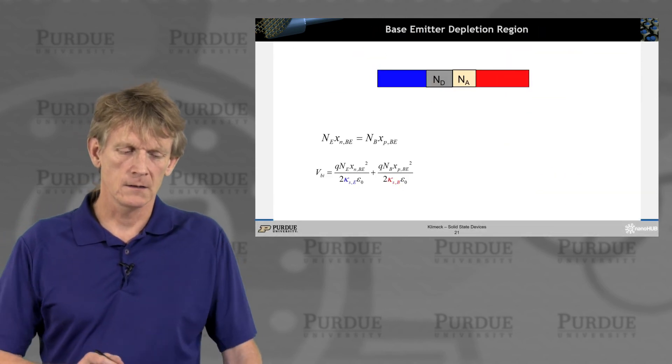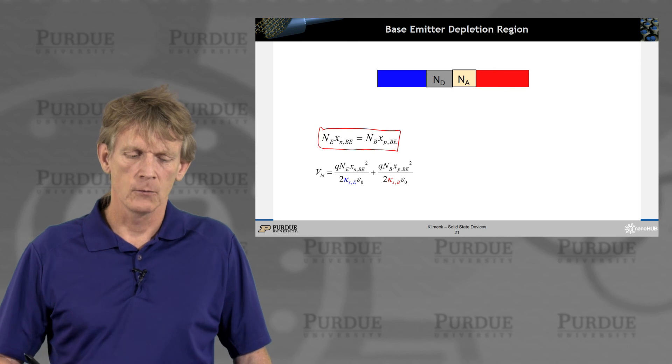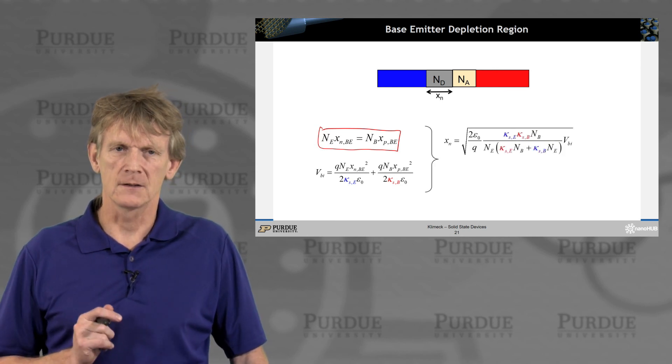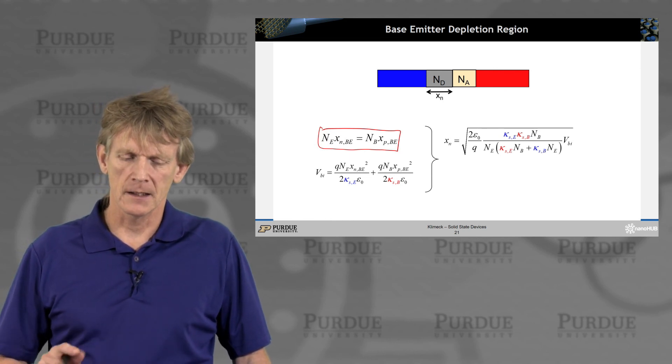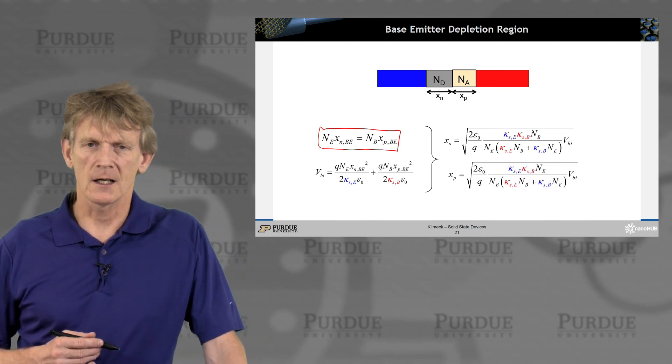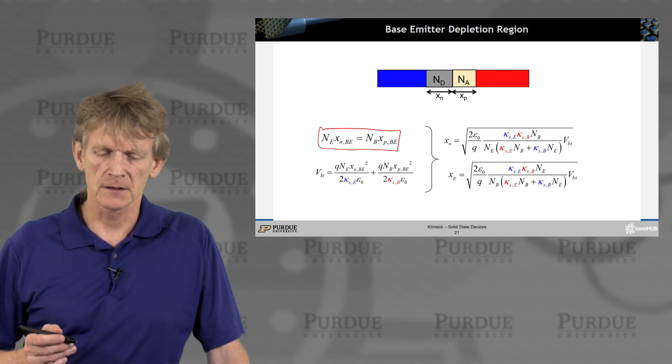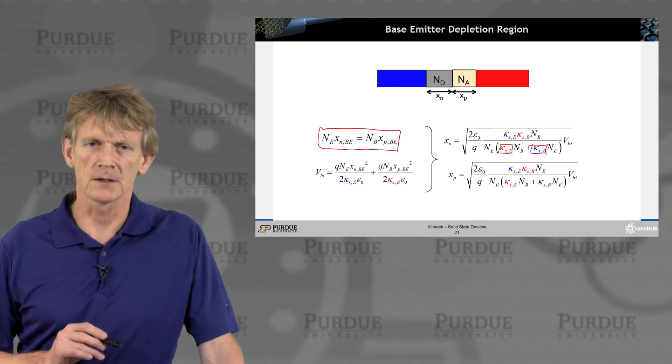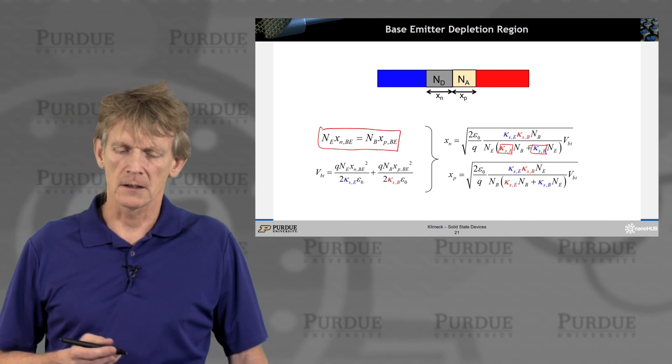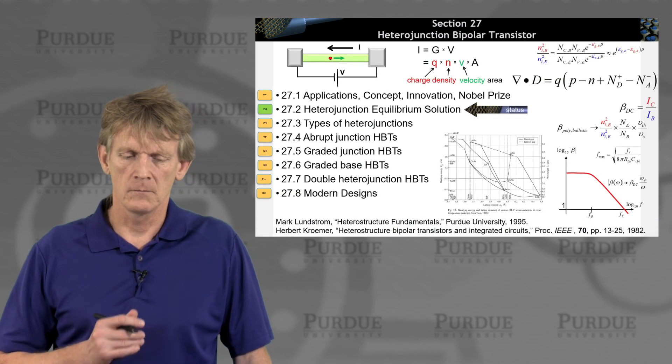Now we can, with the condition like this and an expression for the VBI, solve this for the distance of the depletion region in the left-hand side, in the N side, and for the P side. And these expressions are absolutely equivalent to what we had done before for a PN junction. The only difference is that we carry through the dielectric constants here that used to be outside of the bracket. Now they're carried through explicitly. That's it. So there's just nothing sophisticated here. We just carry through with the same algebra.